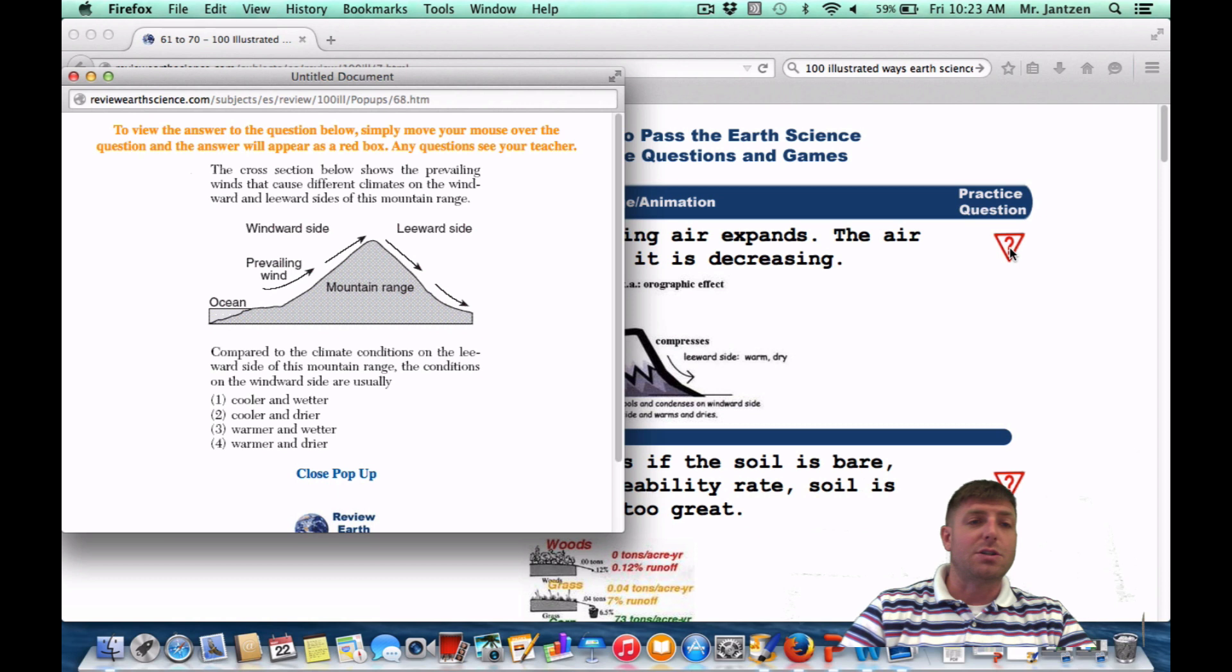This is something you kind of have to have memorized walking in there. If you see it as a practice question, the cross-section shows prevailing winds that cause different climates on the windward and leeward sides of this mountain range. Compared to the climate on the leeward side, the conditions on the windward side are generally what? The windward side is going to be a lot wetter, windward wet, and a lot cooler, so it's going to be choice one.